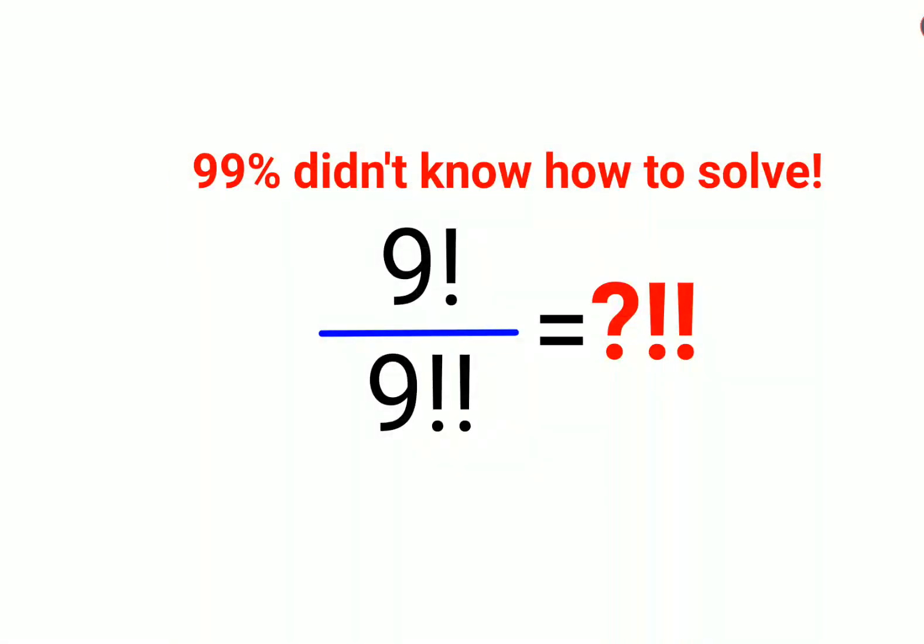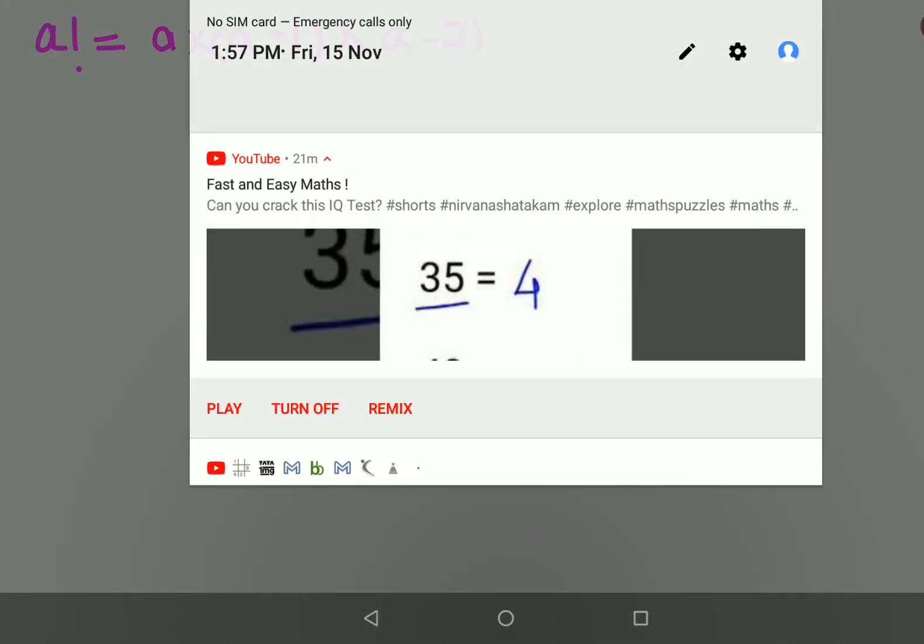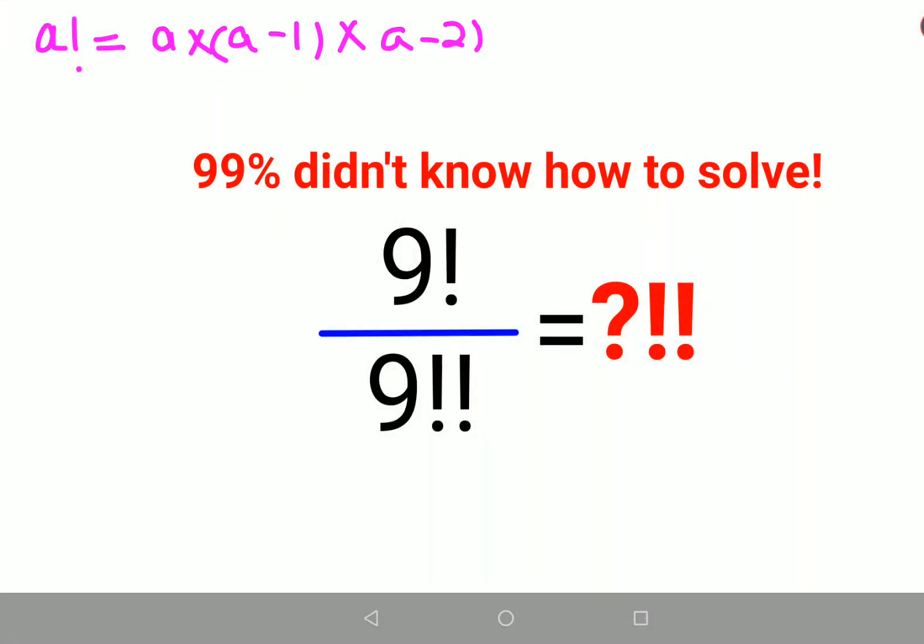We are going to understand how to find factorial. Factorial is basically an exclamation mark which is followed after a number. The expansion is a number into the next number but in decreasing order, and this will continue till you reach the value of 1.